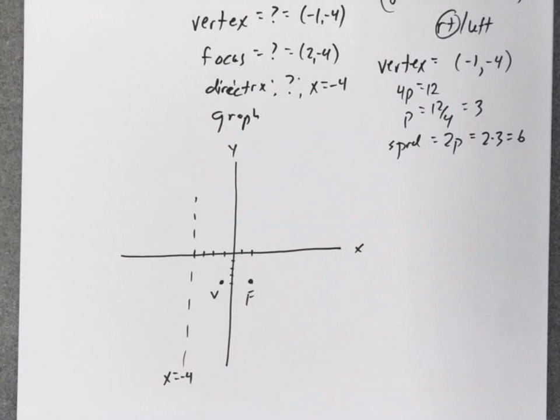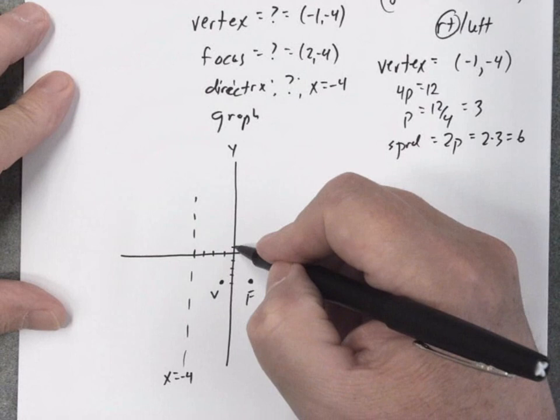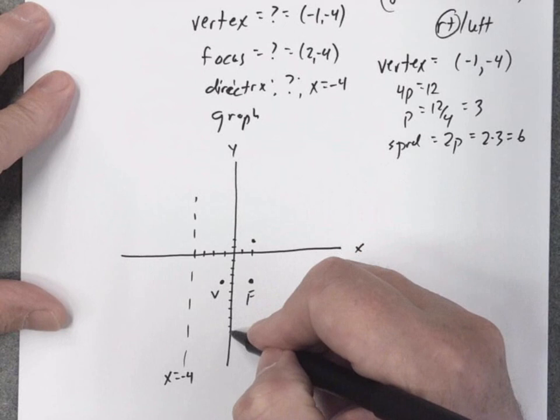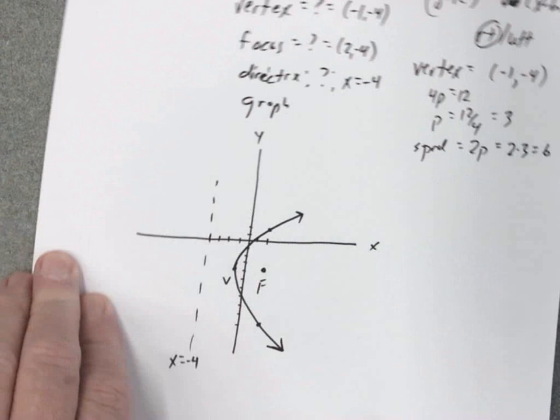So now, to sketch the graph, let me go to my spread of 6. So from the focus, I'm going to move up 6 and down 6. And now, I can make a rough sketch of this parabola.